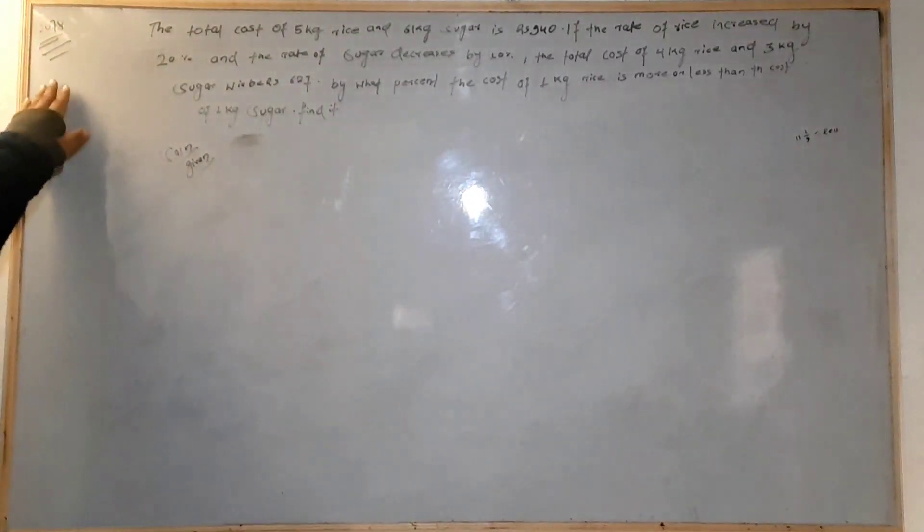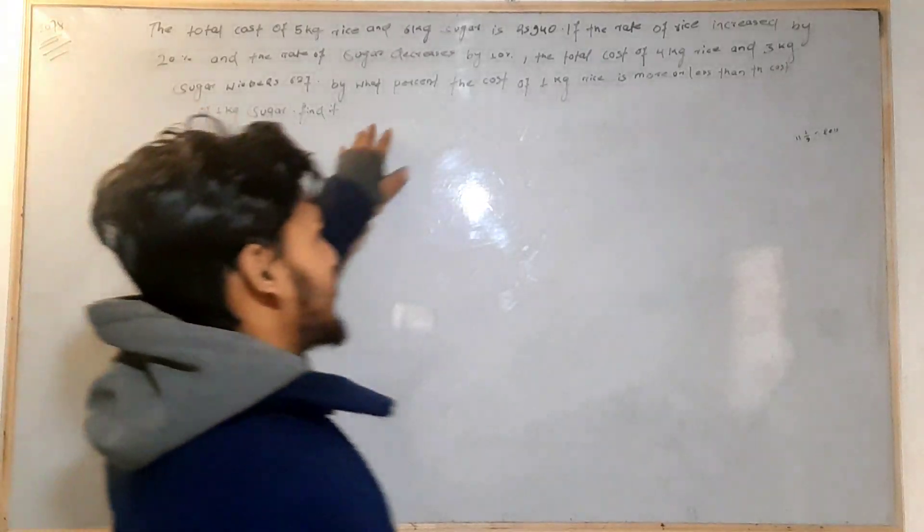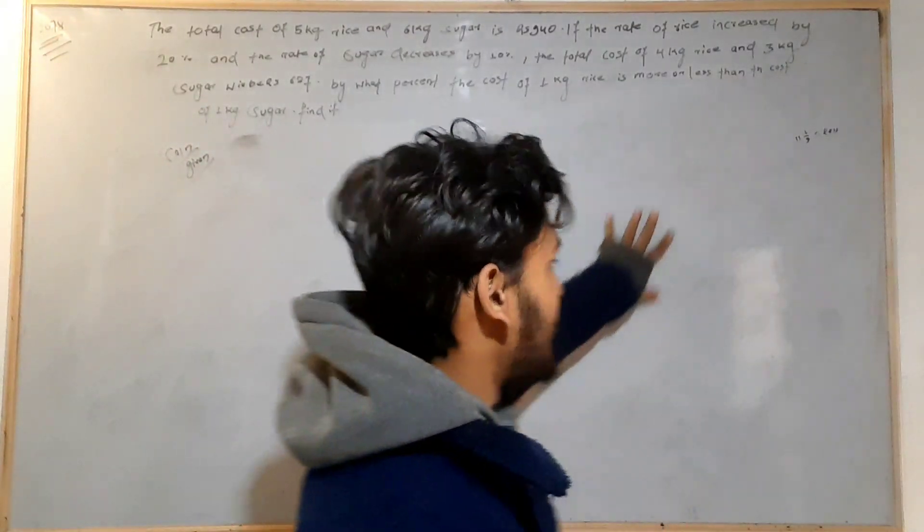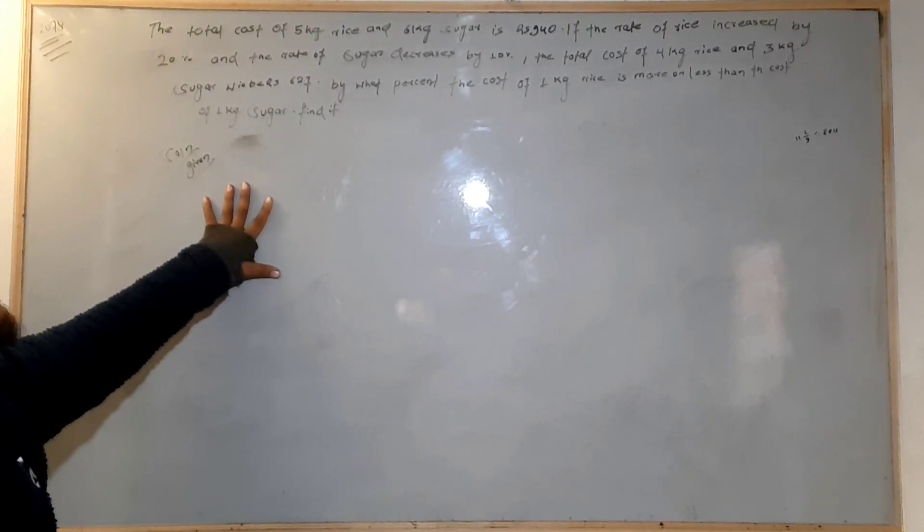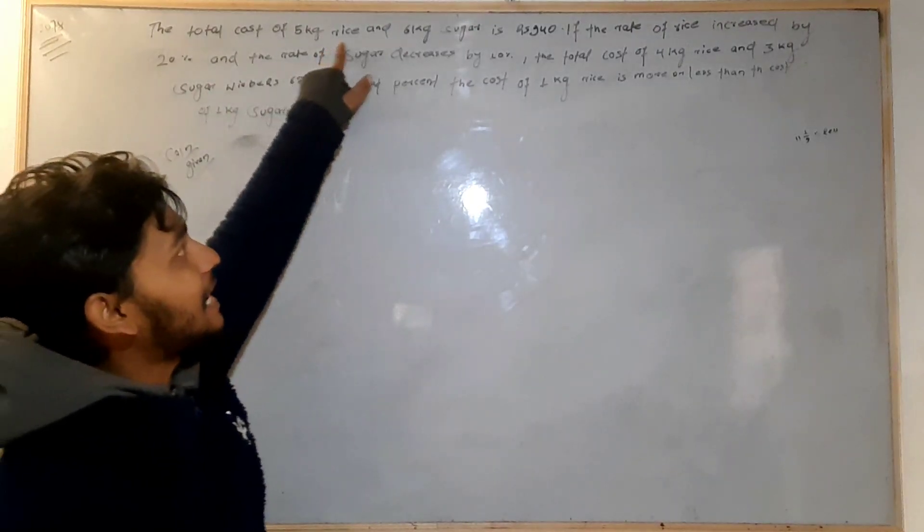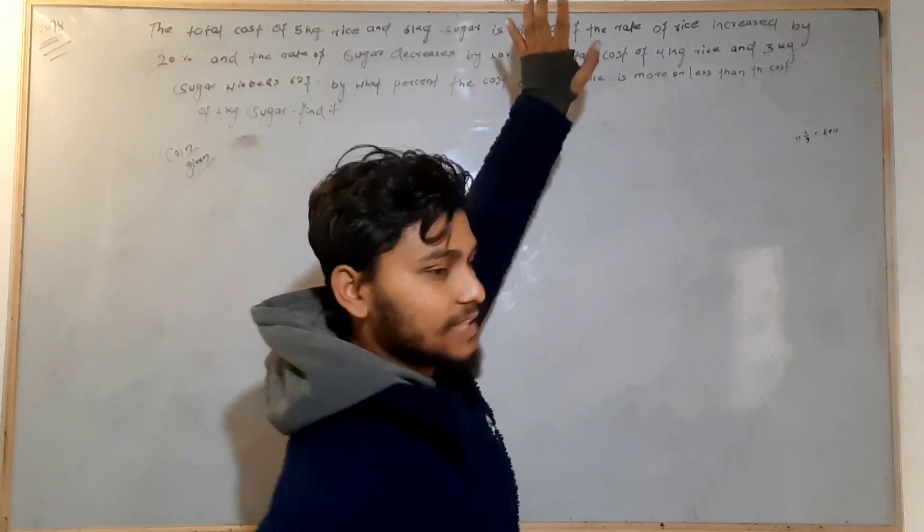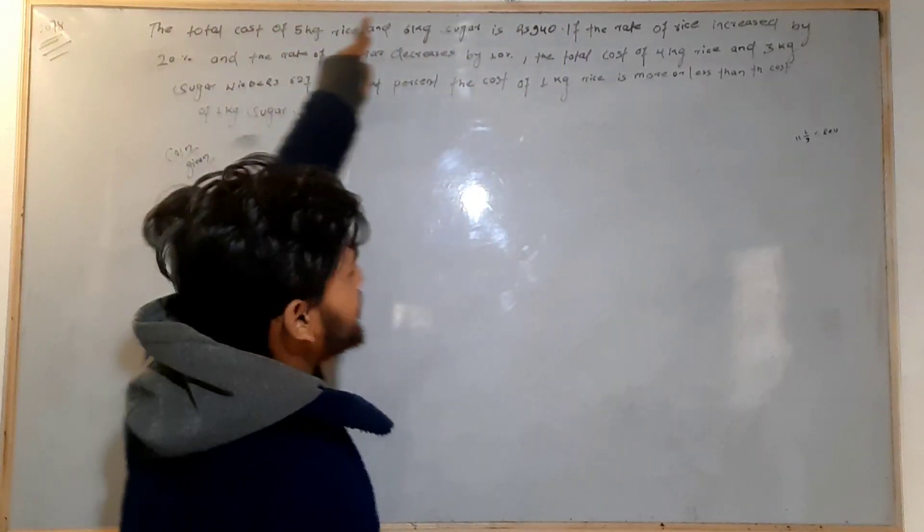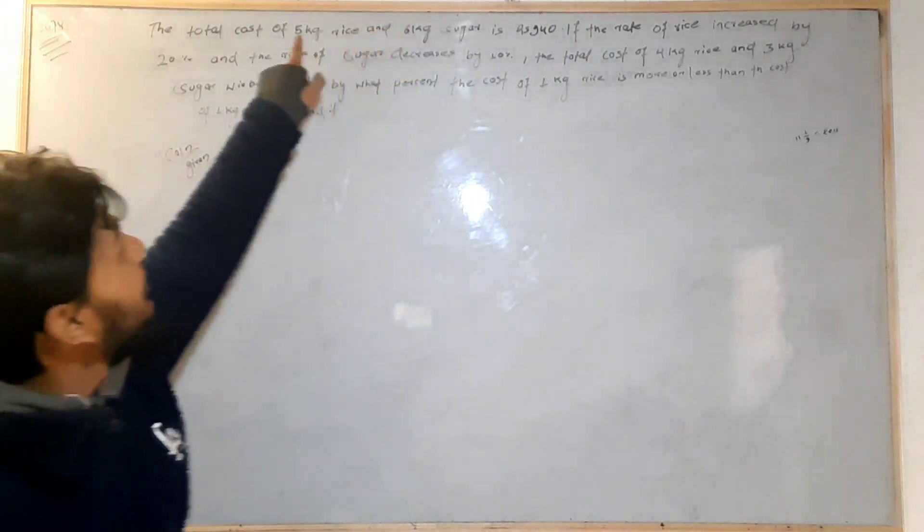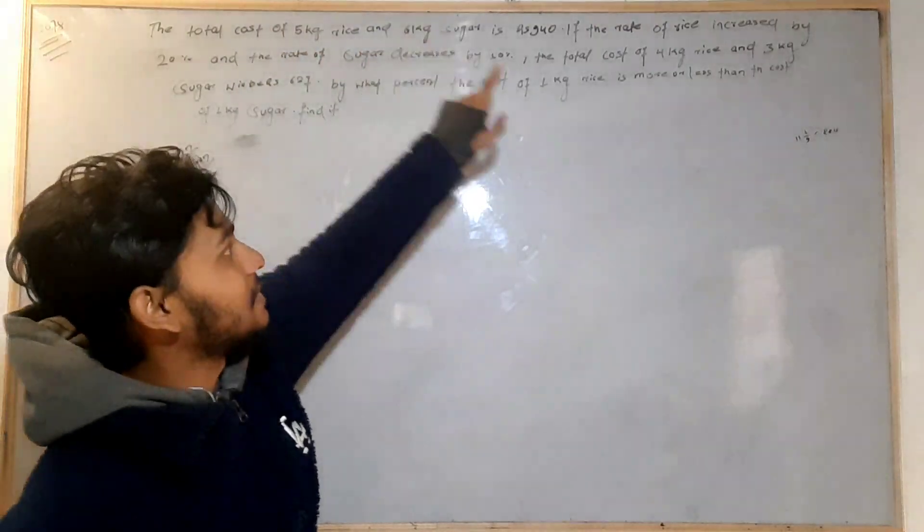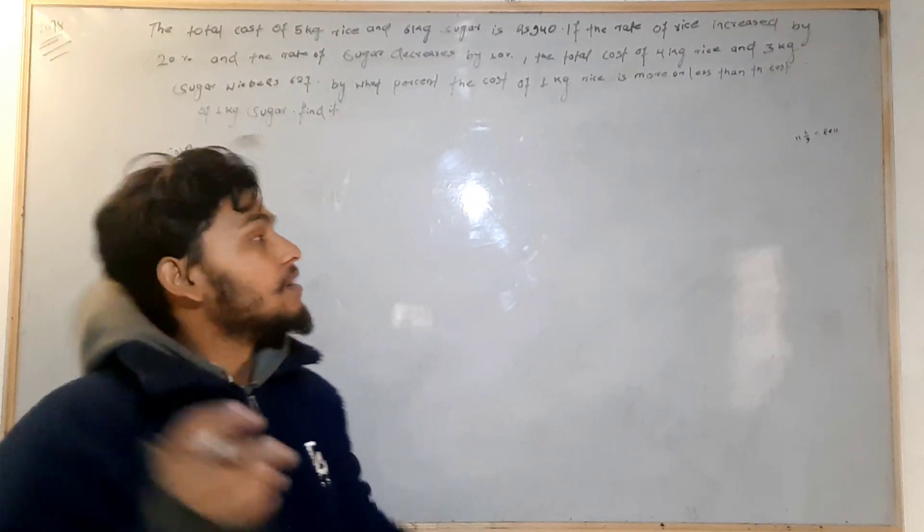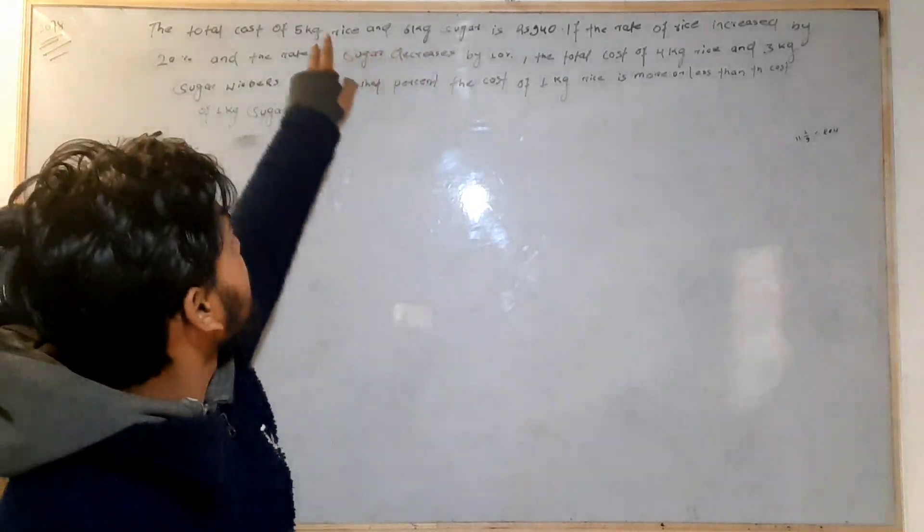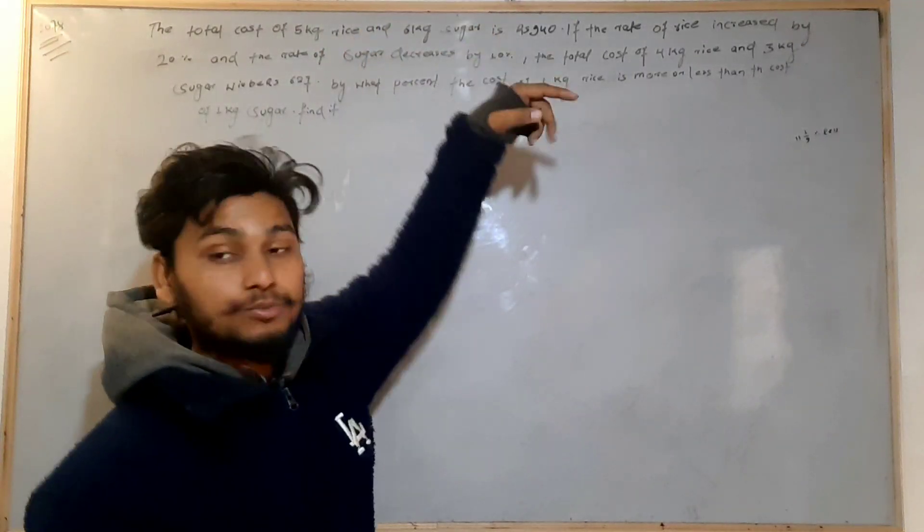Hello everyone! In 1978, my compulsory map, Question 4. The total cost of 5 kg rice and 6 kg sugar is 940. First time, the cost of 5 kg rice and 6 kg sugar is 940.